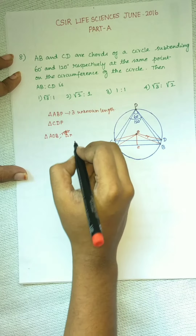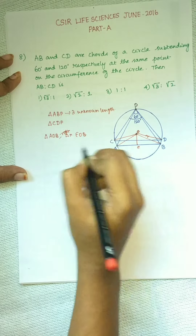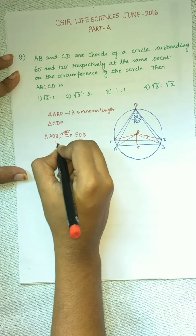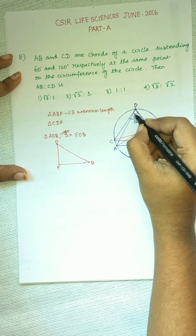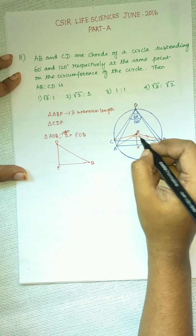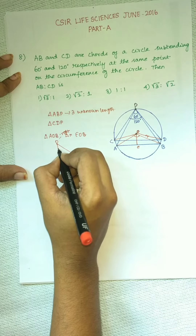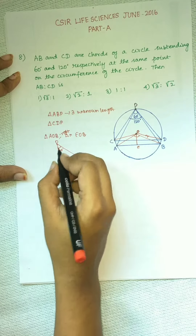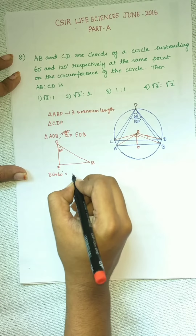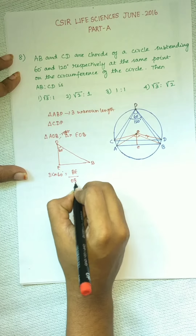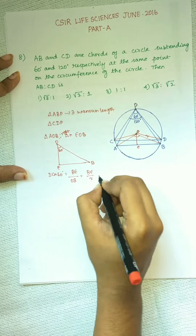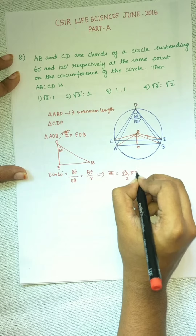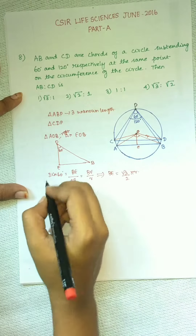Now we have to find the ratio of AB and CD — we have to find the length and find its ratio. If we use triangles ABP or CDP, we end up with 3 unknown lengths, so that is difficult. So we subtend another triangle using the center of the circle to eliminate one of its sides by using the radius, because the radius is common for all sides.